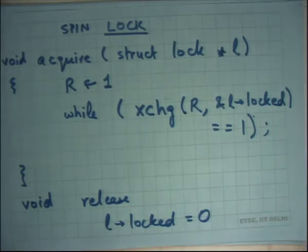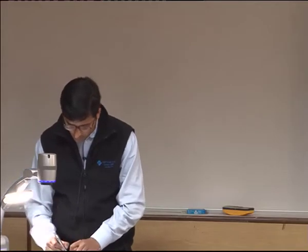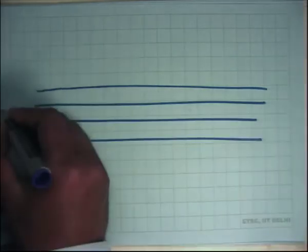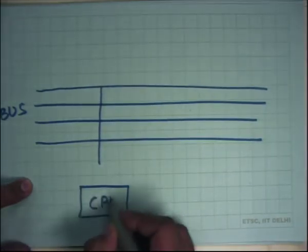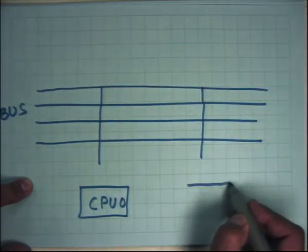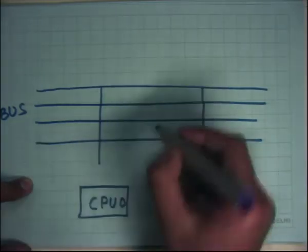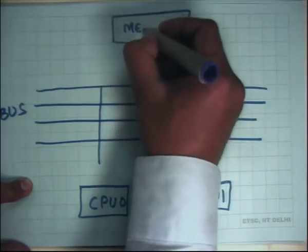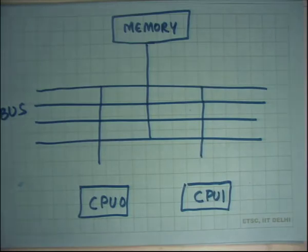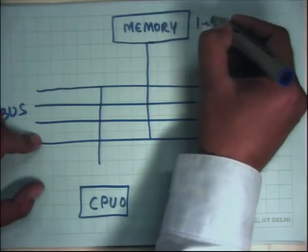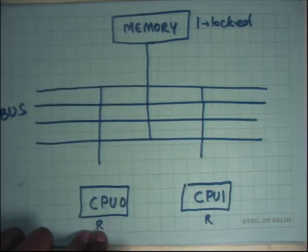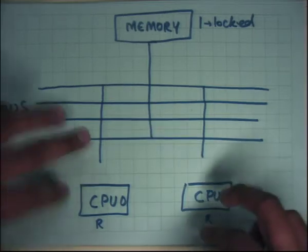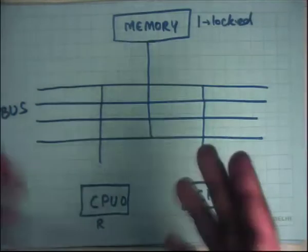Let's see what happens at the hardware level. There is a bus, with CPU 0 and CPU 1, and memory. Inside memory is the variable L.locked; each CPU has private registers. When both threads execute simultaneously, both set R to 1 and call exchange - one wins and gets the lock, the other just spins.